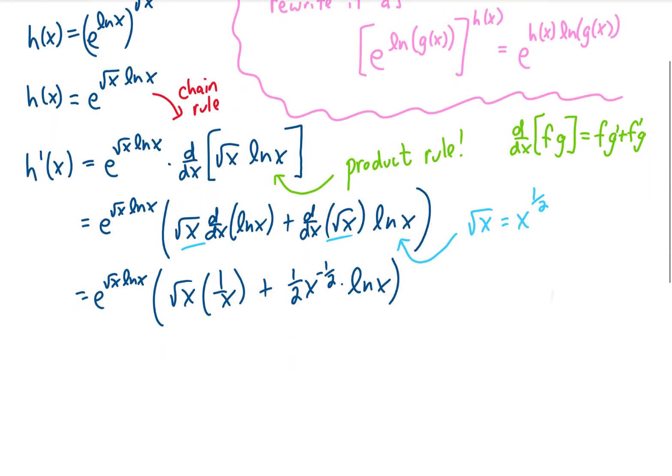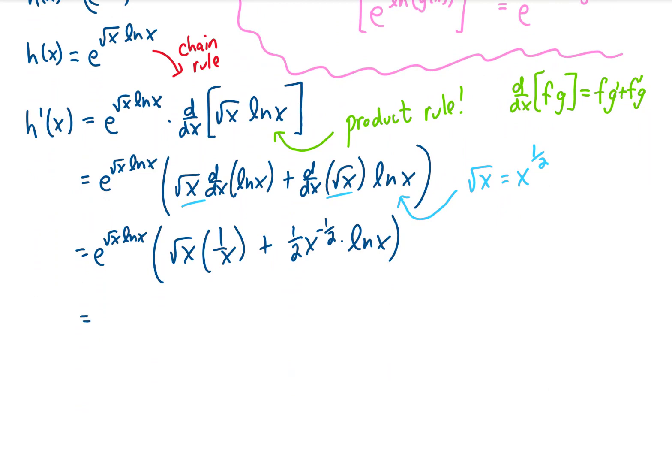I'm just going to do one step of simplification inside of these parentheses. With this term here, remember again that the square root of x is x to the 1 half. If we're dividing that by x, we can take that power on x of 1 half and subtract that power on x of 1, and this whole term just turns into x to the negative 1 half power. And recall that x to the negative 1 half power is the same thing as 1 over the square root of x.